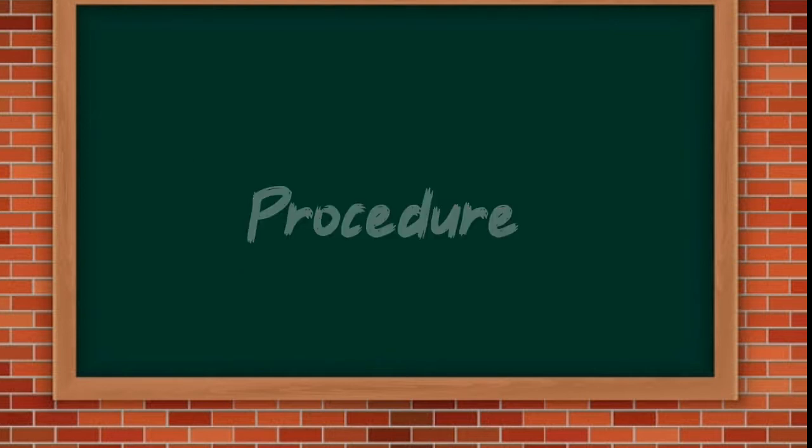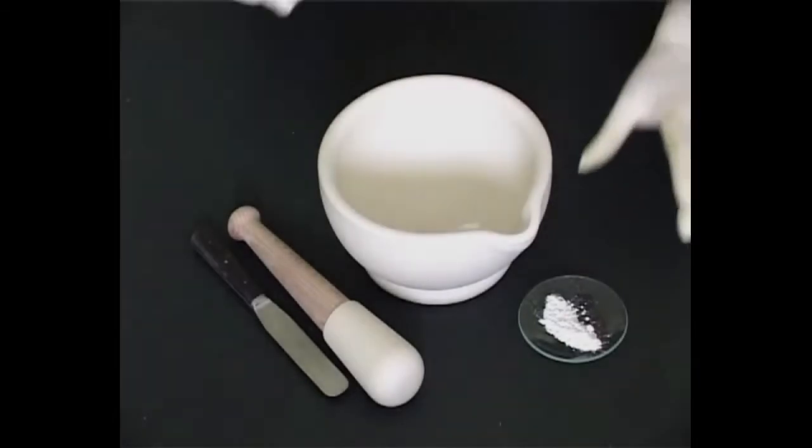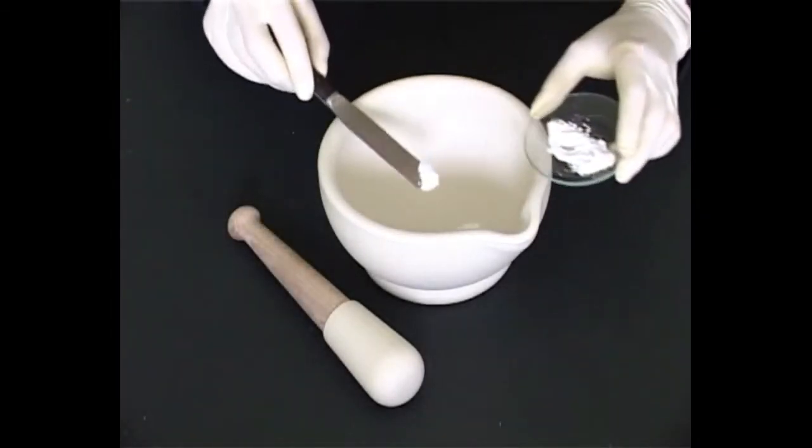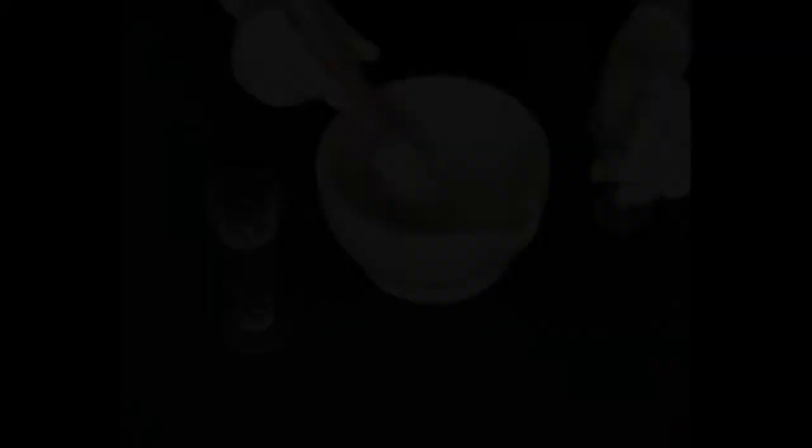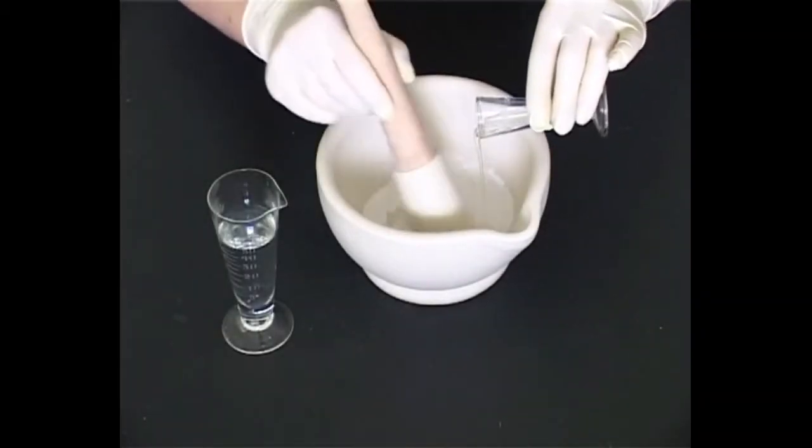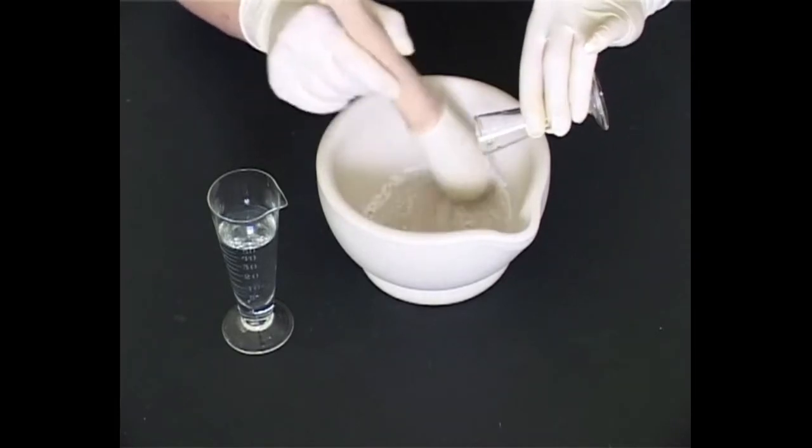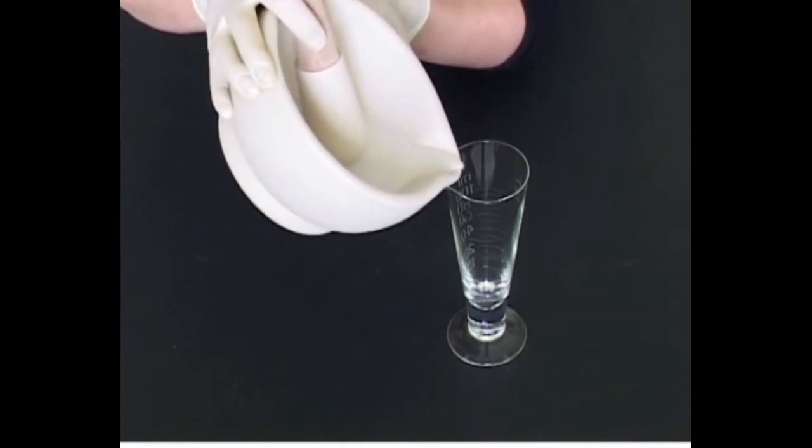Procedure: Take a mortar and add 500 mg of gum to it. Pour a few drops of distilled water and pestle the gum into a fine paste. Transfer the smooth paste to a 50 ml beaker.